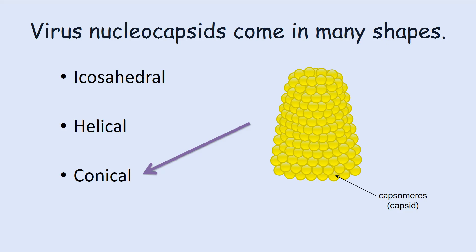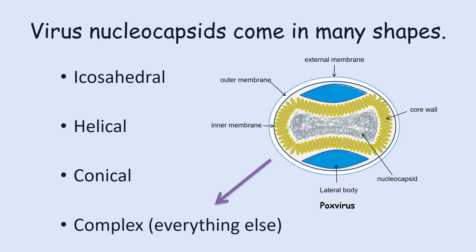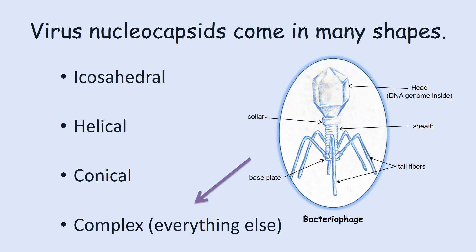The third shape is the conical nucleocapsid. These have a genome tucked inside, similar to that of the icosahedral nucleocapsid. And lastly, there is the group of viruses whose nucleocapsids don't fit any of these three categories — they are called complex nucleocapsids. For example, the pox virus is a virus with a complex nucleocapsid; its nucleocapsid is oddly shaped and surrounded by three membranes with a core wall. Also, the bacteriophage — viruses that infect bacteria — are another example of viruses with complex nucleocapsids, because they consist of an icosahedron-shaped head placed on top of a long cylindrical sheath that has tail fibers.